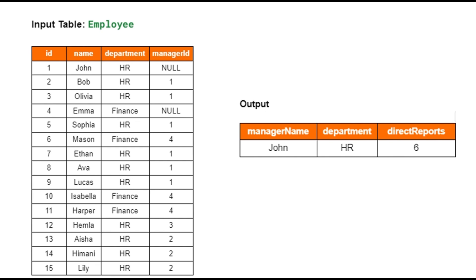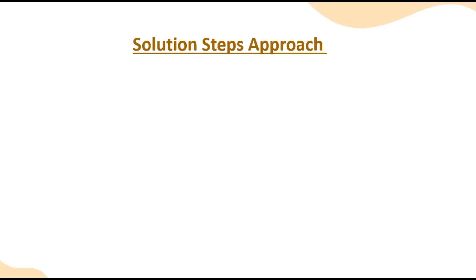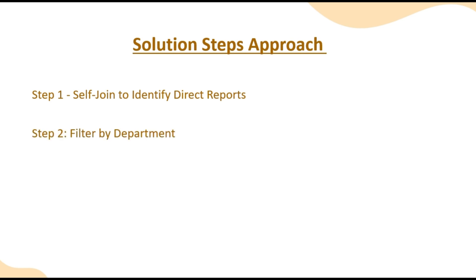Now let's move on to the solution steps. Our first step is to perform a self-join to identify direct reports. Since the employee table contains both employees and manager relationships, we will join the table to itself to match employees with their managers. This will help us count how many employees directly report to each manager. In the second step, we filter by department to ensure direct reports and their managers belong to the same department.